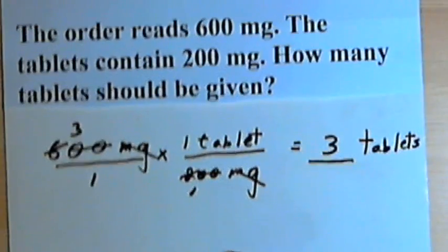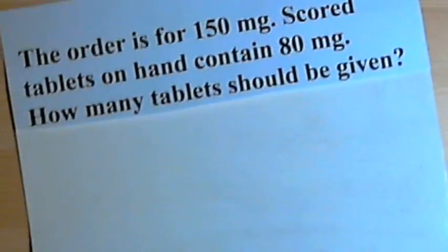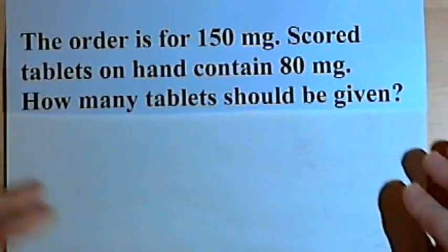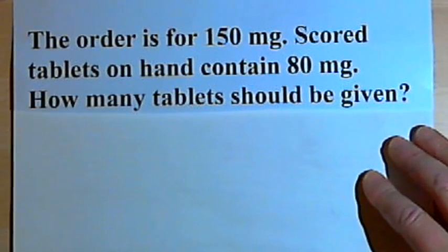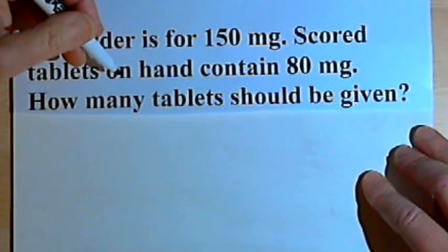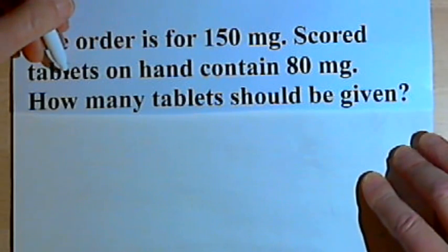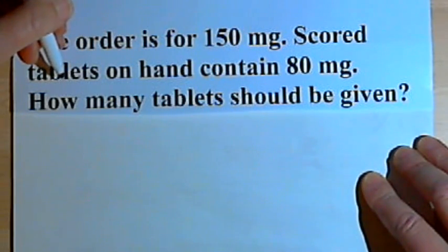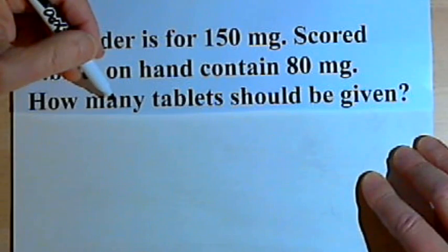Here's another one. The order is for 150 milligrams. Scored tablets on hand contain 80 milligrams. Remember, if it's a scored tablet, it means if you need to, you can cut it in half. How many tablets should be given?